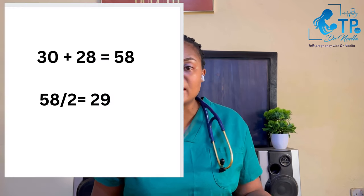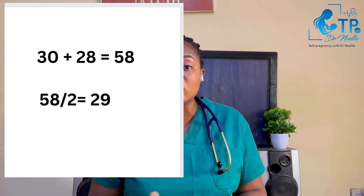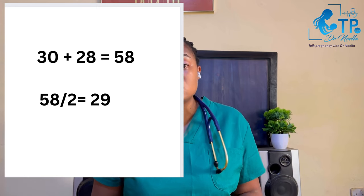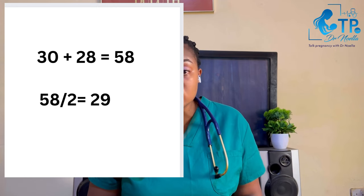If you have 30 days and 28 days, you take the average: 30 plus 28 divided by 2 gives you 29 days. So you have an average cycle of 29 days. If your cycles are consistently the same, you already know your cycle length without averaging.